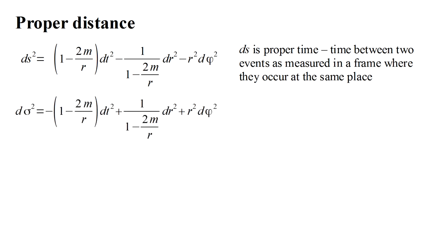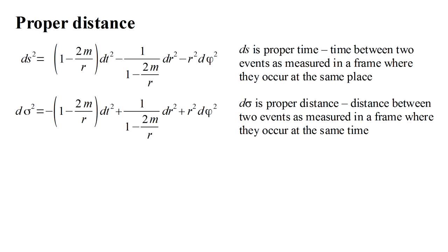We can also talk about the proper distance d sigma, the distance between two events as measured in a frame where they occur at the same time. And this is just the negative of the ds squared expression. The proper time interval, when dr and d phi are zero,